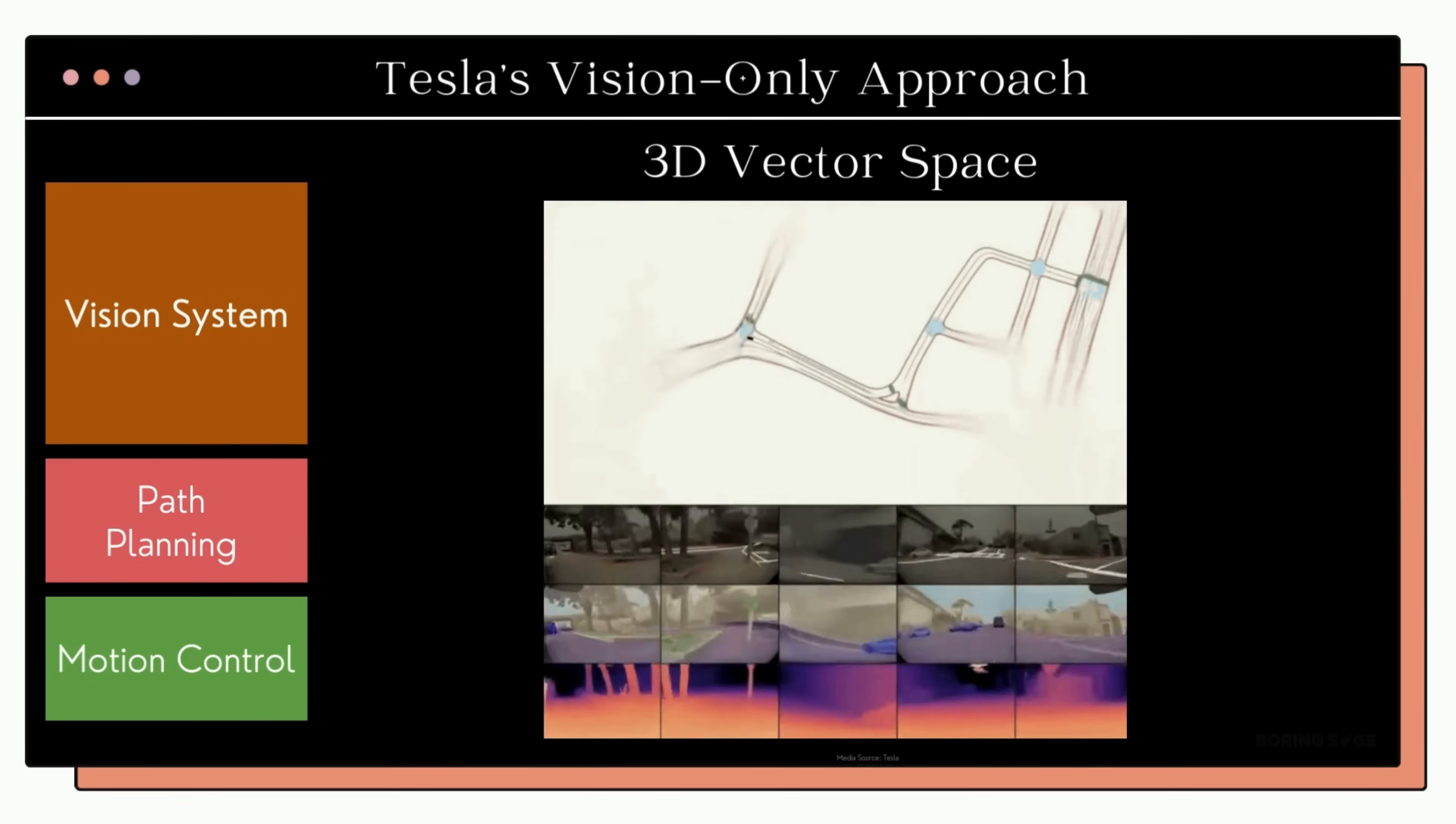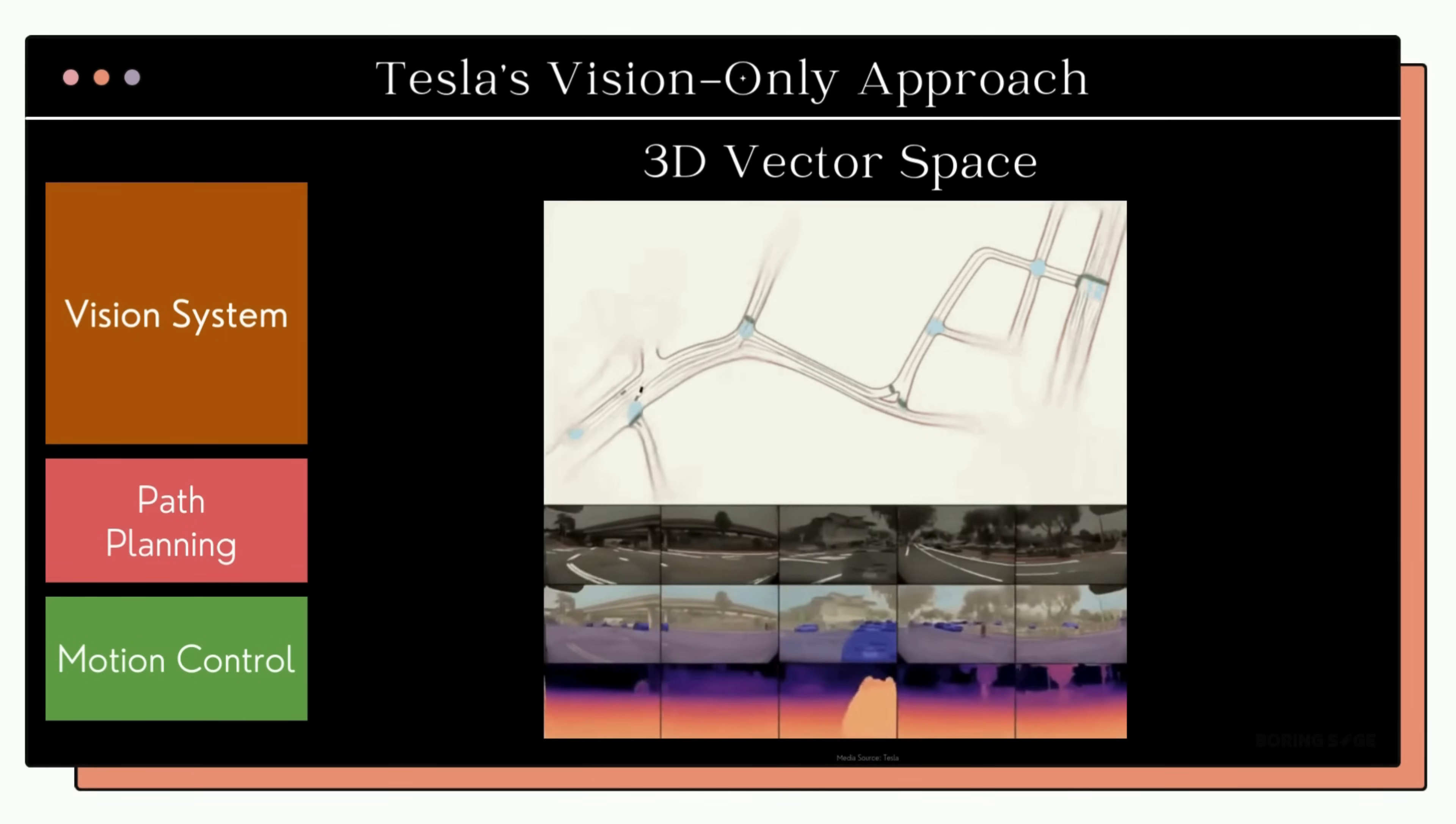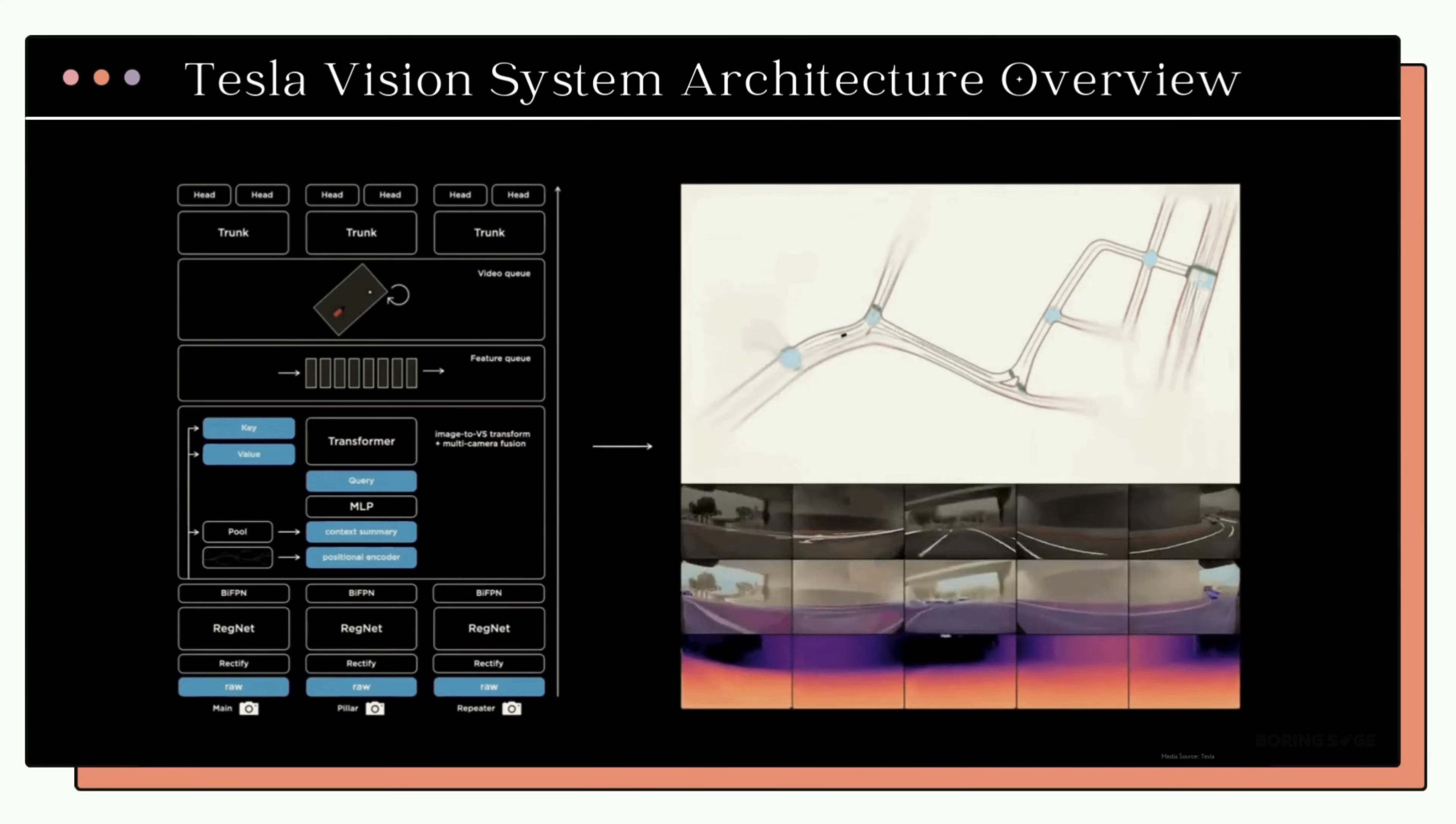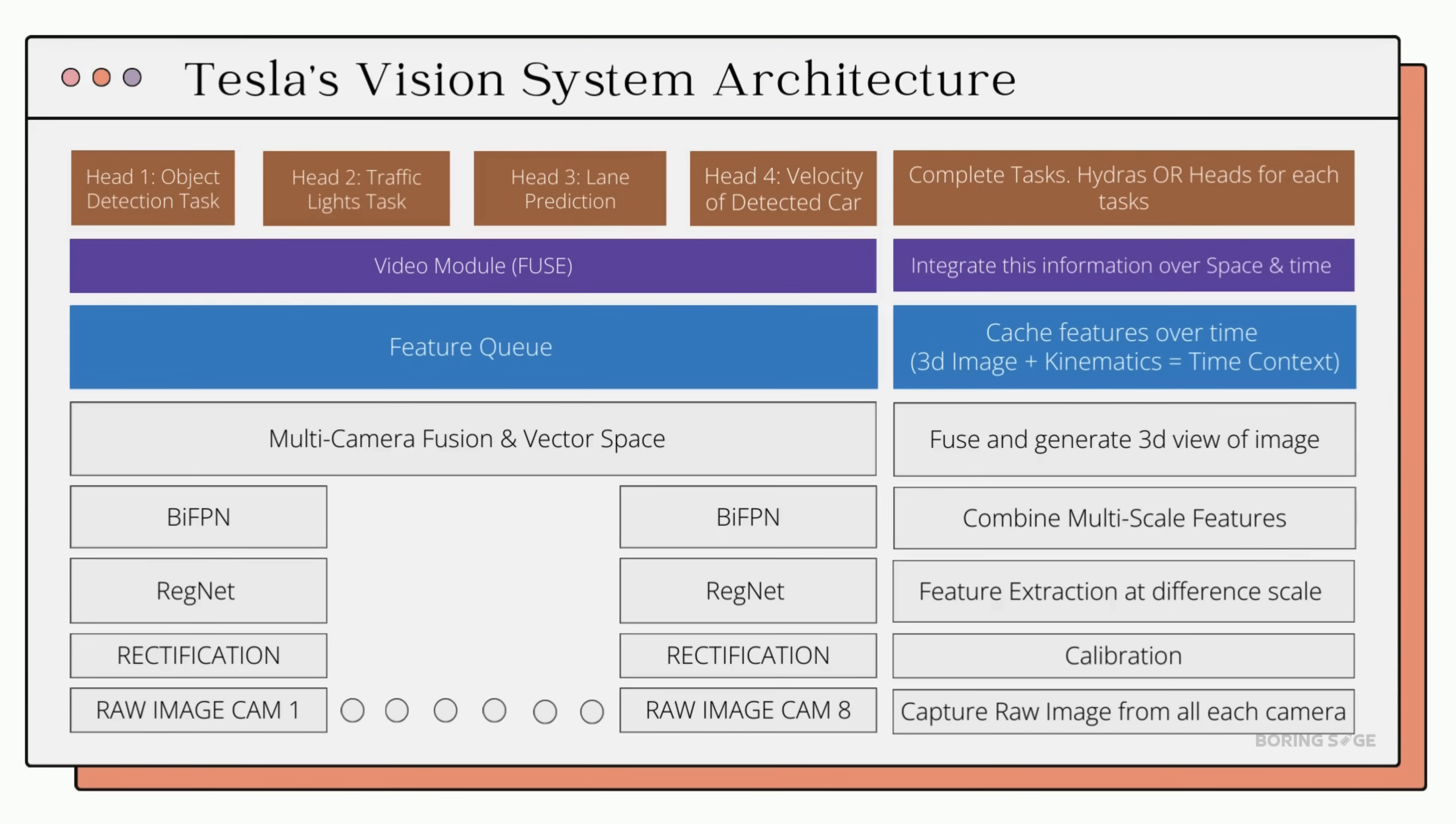To achieve this, Tesla's engineering team, led by Andrei Karpathy, developed sophisticated neural networks that generate a precise and cohesive 3D representation of the surroundings such as this one. This is what the original architecture looks like that was developed by the AI team at Tesla. It's these layers of neural networks that take the camera feeds and do the job of perception and localization. Now let's decode this architecture. Here is the simplified version of this architecture that we'll cover today.